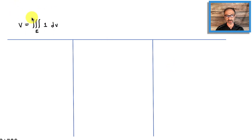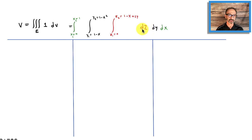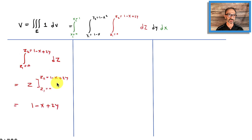Now for the calculations. I'm dividing into three color-coded parts to keep the notes clean. The inner integral is with respect to z, from z1 equals 0 to z2 equals 1 minus x plus 2y. Integrating 1 dz gives z, so substituting the bounds gives us 1 minus x plus 2y. Plugging in zero contributes nothing, leaving 1 minus x plus 2y as the result of the z integration.